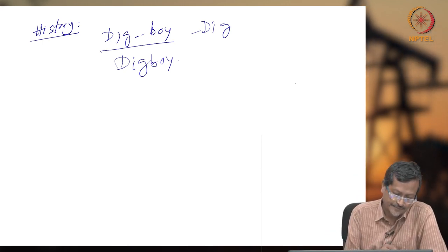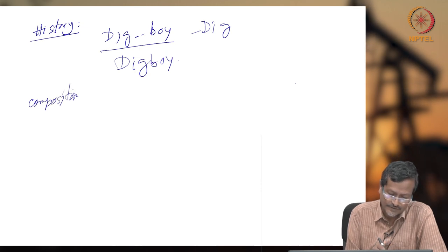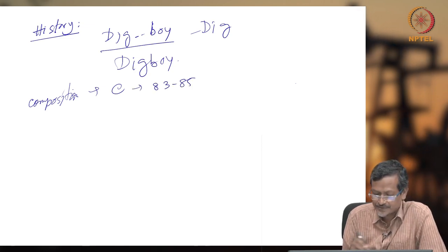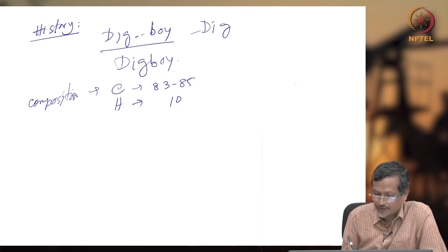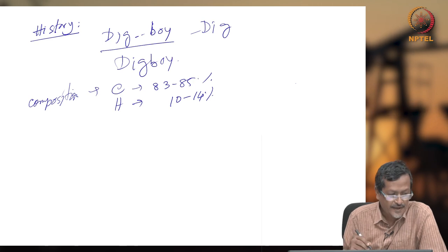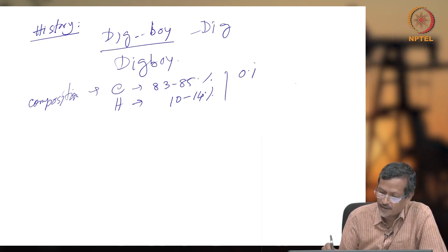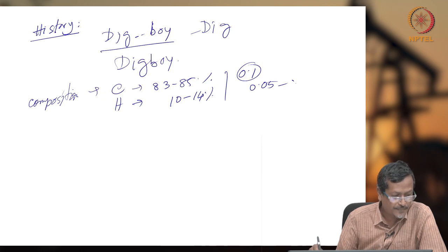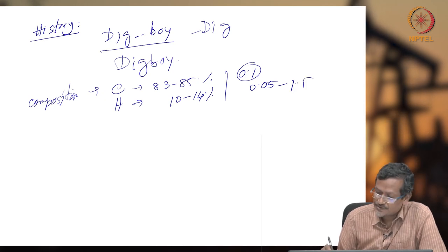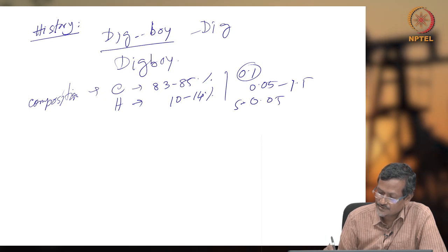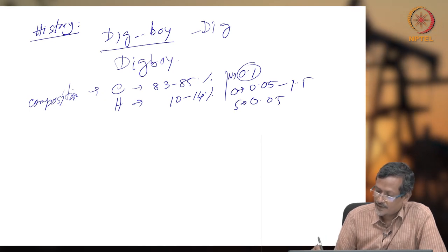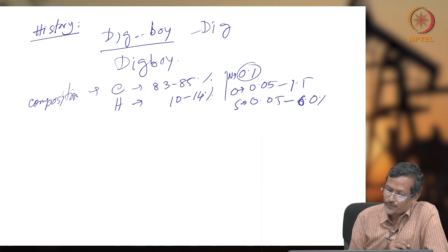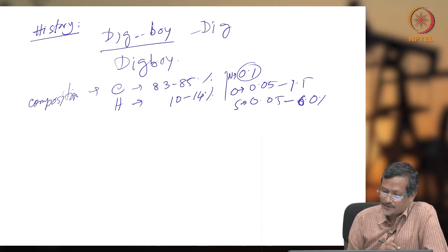Regarding oil and gas composition: the major component is carbon at around 83 to 85 percent, hydrogen at 10 to 14 percent, nitrogen at about 0.1 percent, oxygen at 0.05 to 1.5 percent, and sulfur along with oxygen and nitrogen at 0.05 to 6 percent. There are no significant metal contents such as sodium or potassium. Carbon and hydrogen together form hydrocarbon, which provides the main energy.